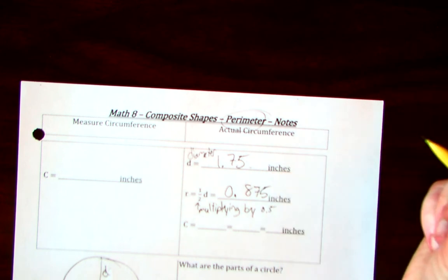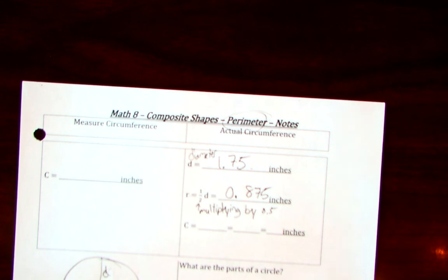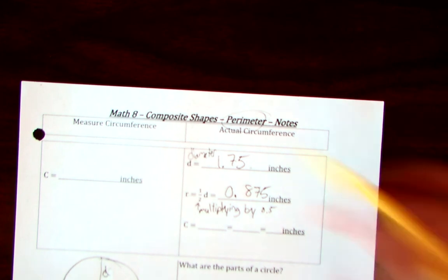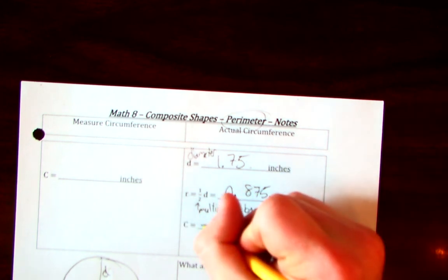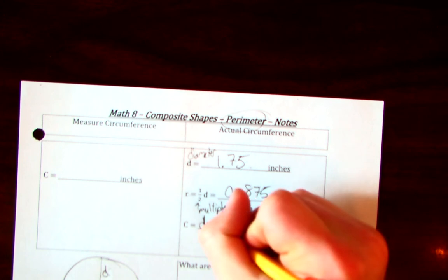The circumference is the same thing as, well, let's use diameter. Let's use diameter times pi. That one's a simple one to do.